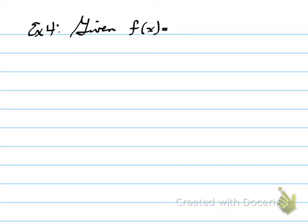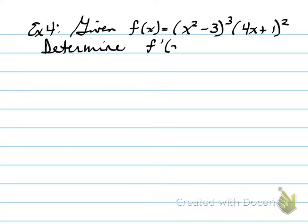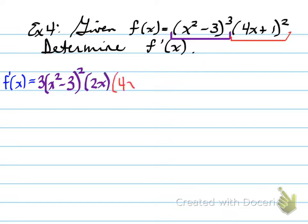So, example number 4, given f at x is equal to x squared minus 3 cubed times 4x plus 1 squared. Determine f prime of x, which means that we have to look at this and write this out as determine the product rule. Use the product rule to find the derivative. So, to do that, we take the derivative of the first, which will be 3 times x squared minus 3 squared times 2x times the second plus the second derivative times the first.